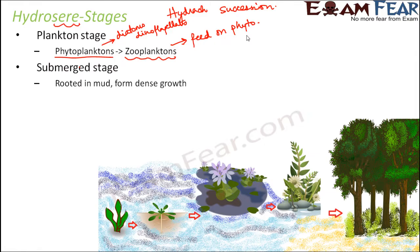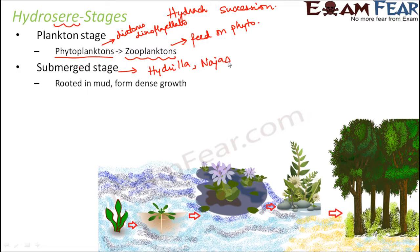The next stage is the submerged stage. The soft mud enriched with organic matter favors the growth of submerged plants. Examples of submerged plants include hydrilla and najas. These plants are rooted in mud and form a dense growth.